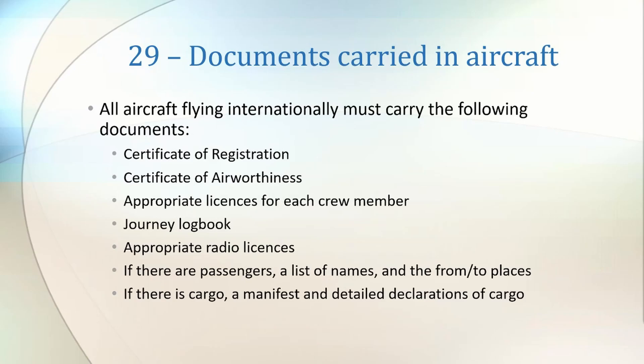Article 29 lists the documents that all aircraft flying internationally must carry with them. These are certificate of registration, certificate of airworthiness, appropriate licenses for each crew member, journey logbook and appropriate radio licenses. If there are any passengers on the flight, a list of names, departure and destination must be recorded. If there is any cargo on board, there must be a detailed manifest.